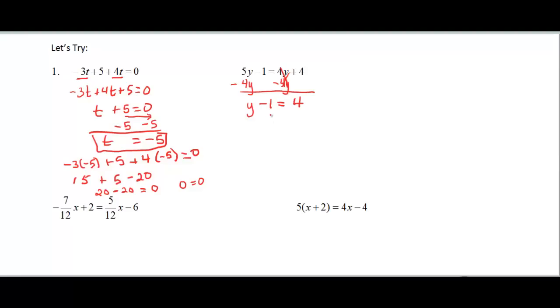Now I need to add 1 to both sides. So we add 1, and we get y, those cancel out, equal to 4 plus 1, which is 5. Let's check.